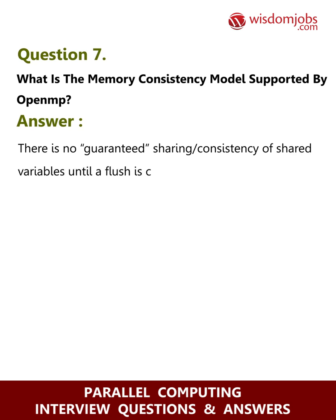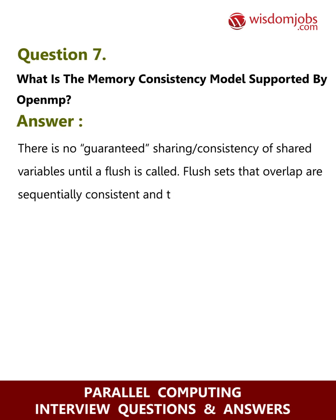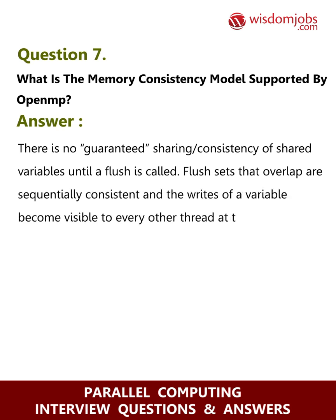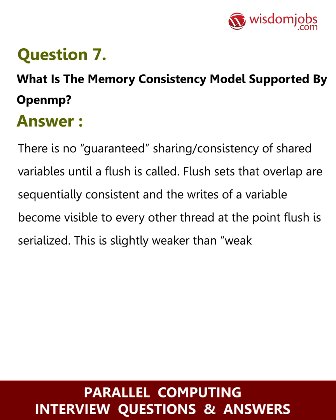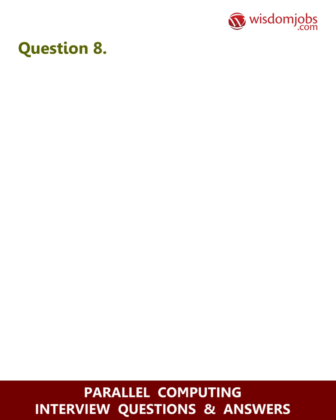Flush sets that overlap are sequentially consistent, and the writes of a variable become visible to every other thread at the point flush is serialized. This is slightly weaker than weak consistency.